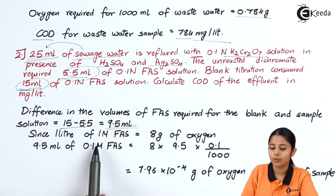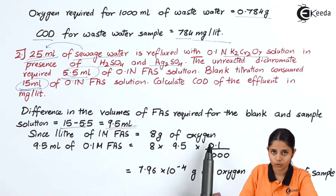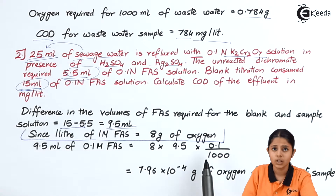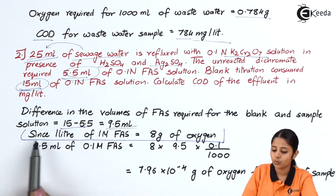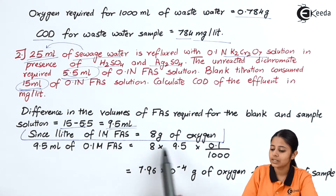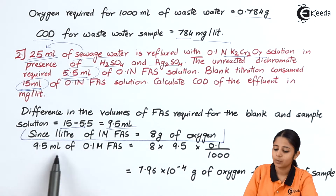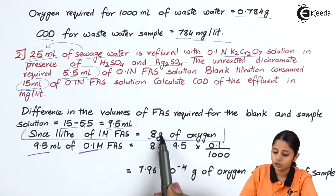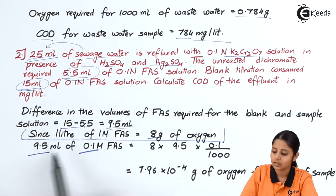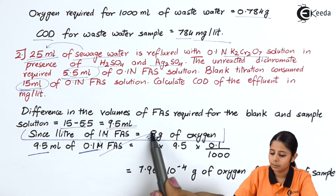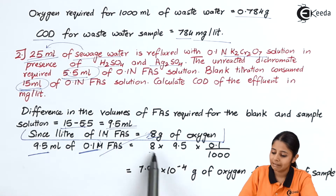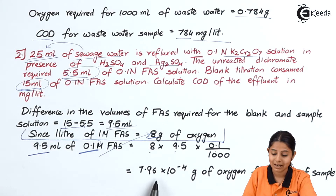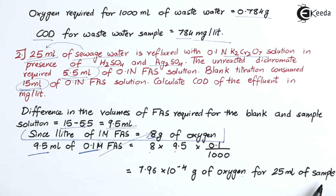Since 1 litre of 1 molar FAS equals 8 grams of oxygen, for 9.5 ml of 0.1 normal FAS we calculate: 9.5 × 0.1 × 8 divided by 1000, which equals 7.96 × 10⁻³ grams of oxygen for 25 ml of sample.